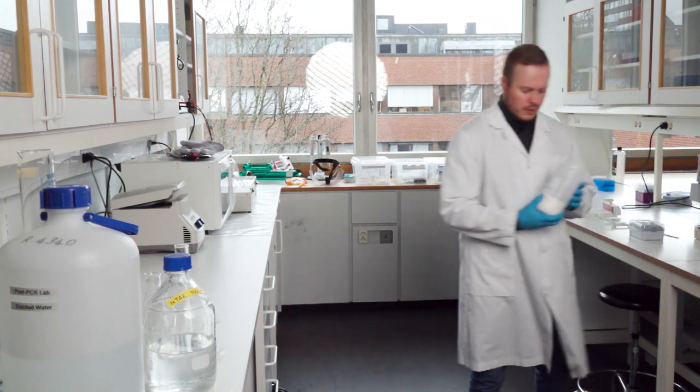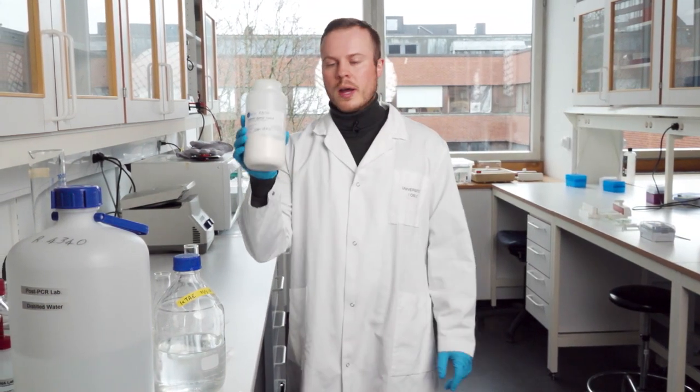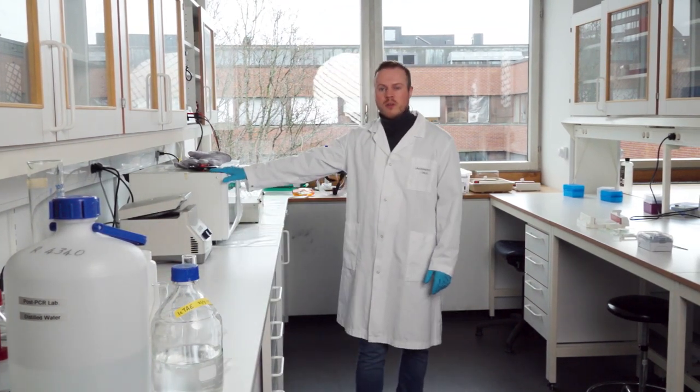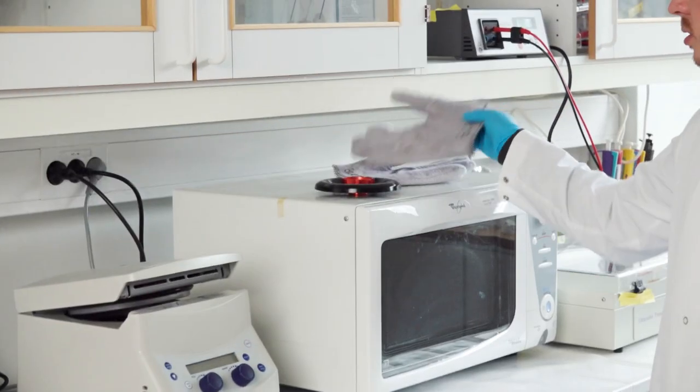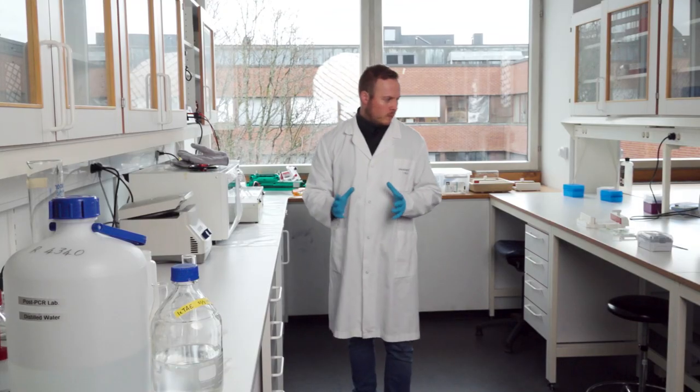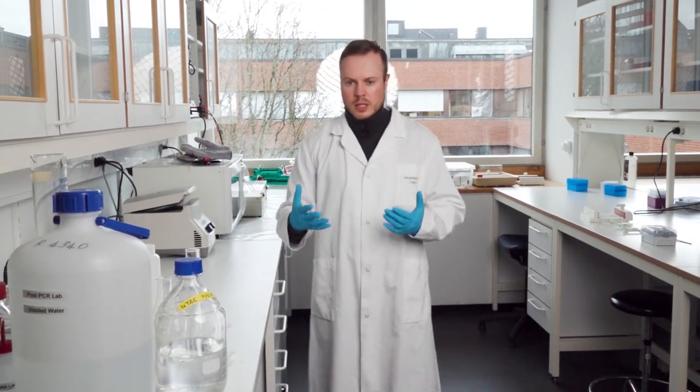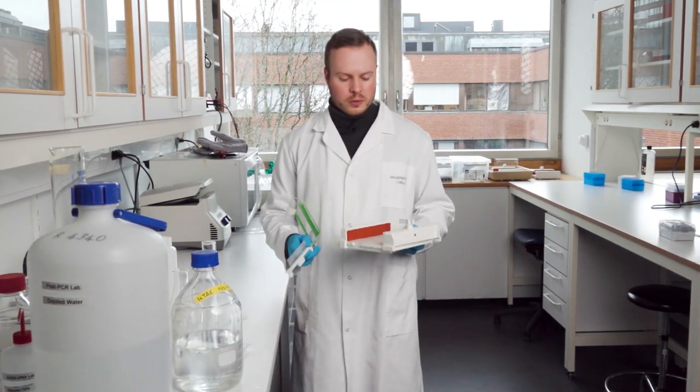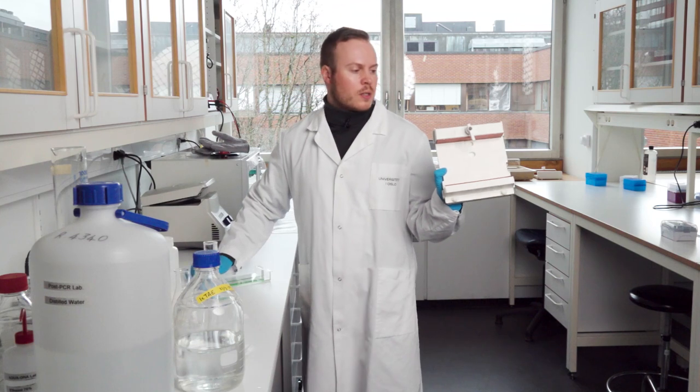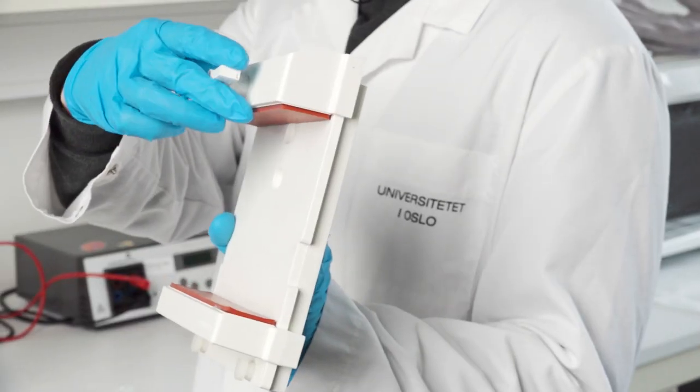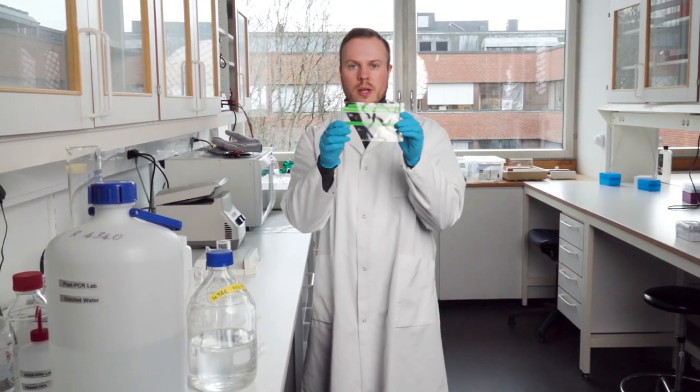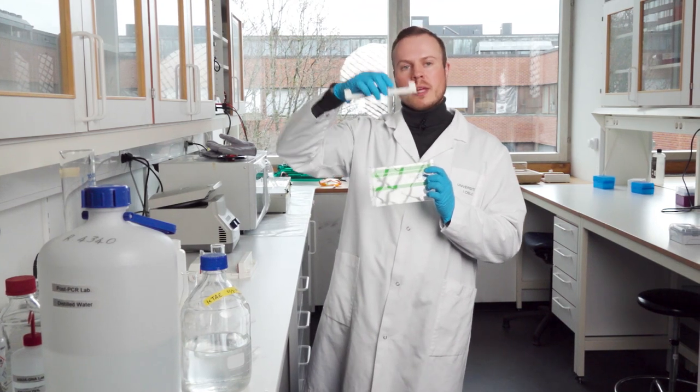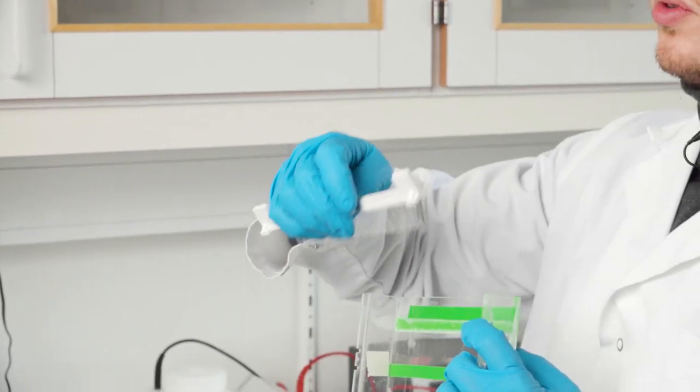We need the agarose powder, a microwave oven, and heat-resistant gloves. After making the gel, we need a mold. We use this adjustable mold with a lever and this tray with teeth. The teeth make the wells that we put the material into that we want to run through our gel.